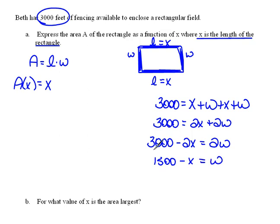This, then, will tell us what we can replace W with in our area formula. So instead of W, I'm going to say 1,500 minus X. And then we can clean up our area formula. So the area in terms of X would equal 1,500X minus X squared.